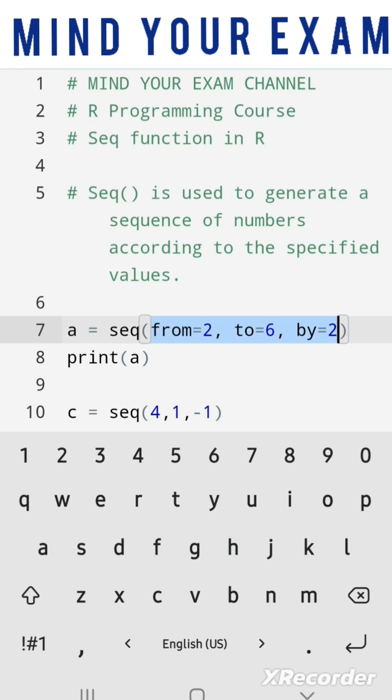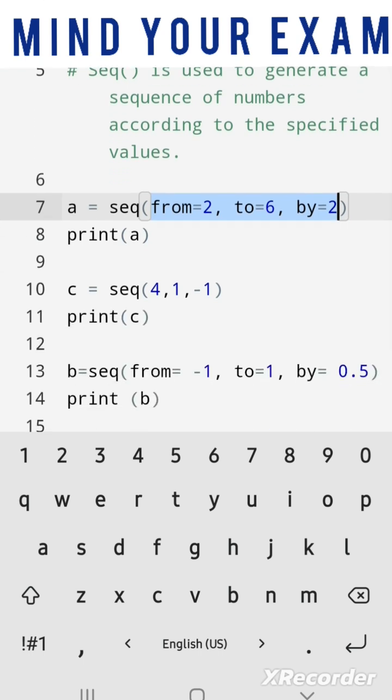So in this first case, a sequence will be generated which will start at value 2 and end at 6 and will have a gap of 2. So 2, 4, 6 would be the output.